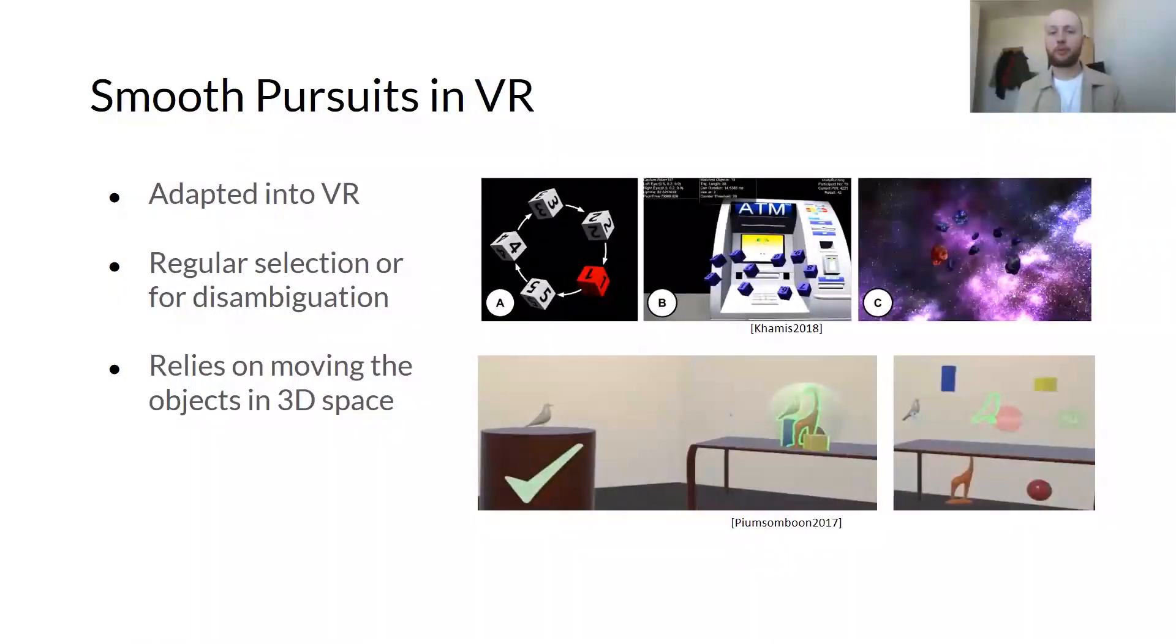Prior work used smooth pursuit for selection and disambiguation in VR, however, for selection of objects presented in motion. A distinct novelty of our work is that we instead present motion around static 3D objects to facilitate their selection by pursuit, without changing the object's size or position.